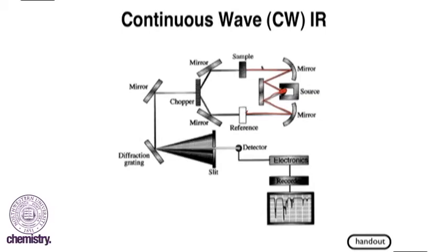If we take those two beams and recombine them, then we will be subtracting out any gases like carbon dioxide, any gases that might be in the room that could interfere with our sample. Then we take that combined IR signal and pass it through what's known as a diffraction grating.